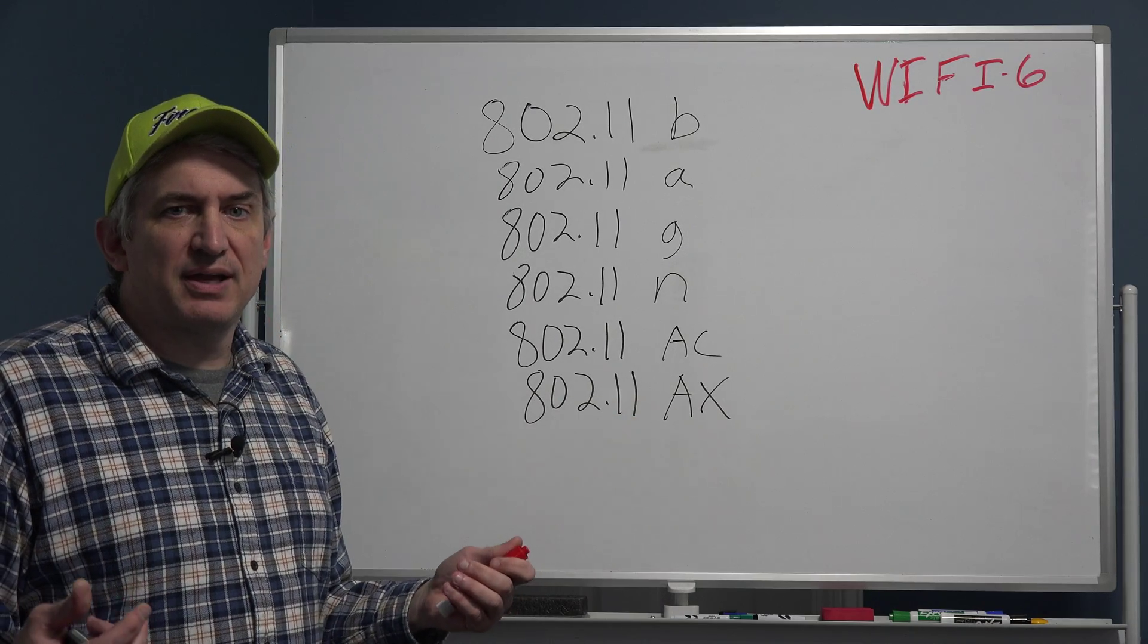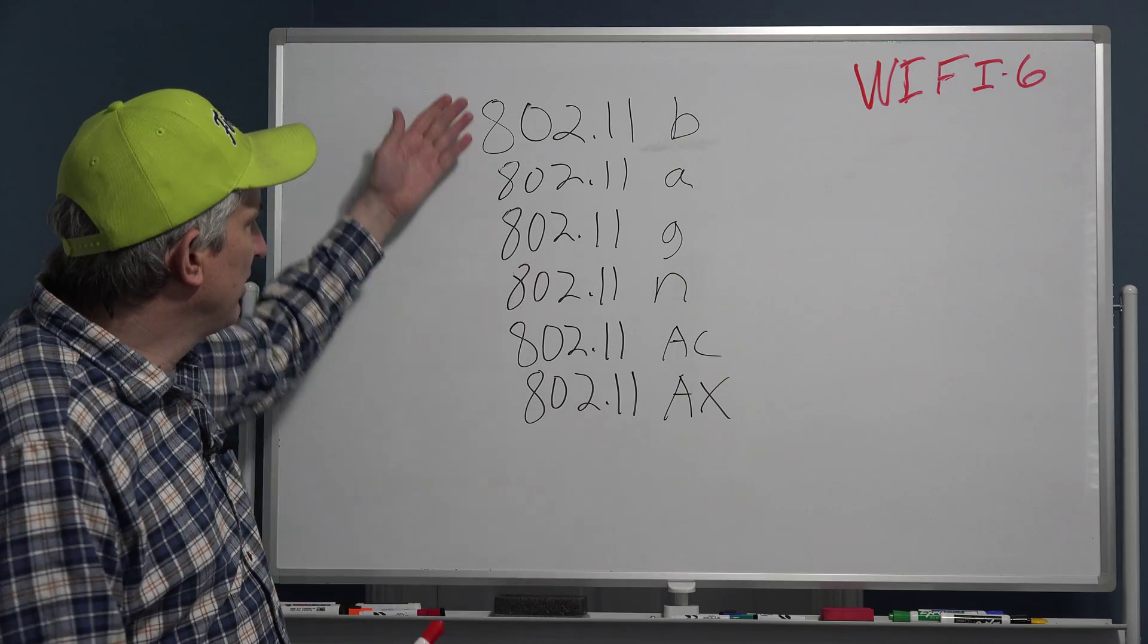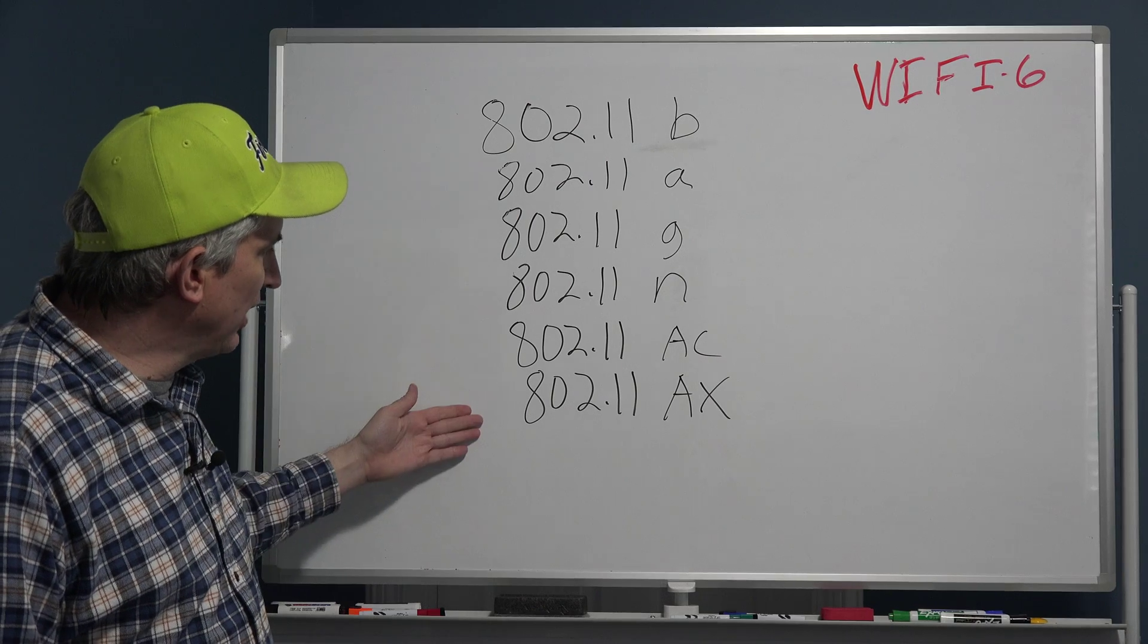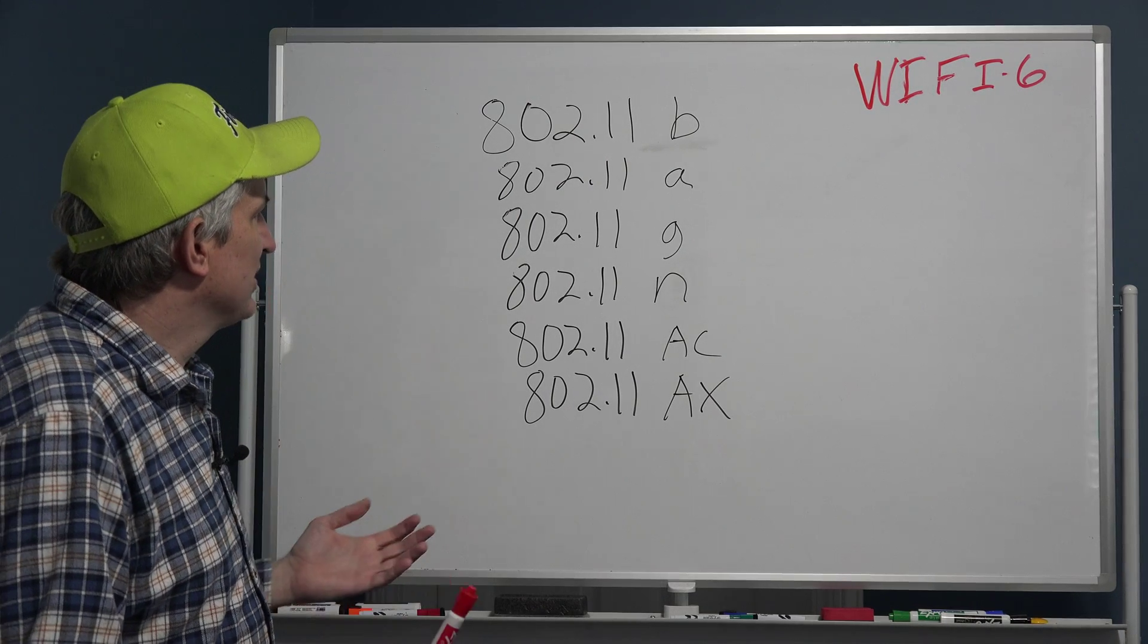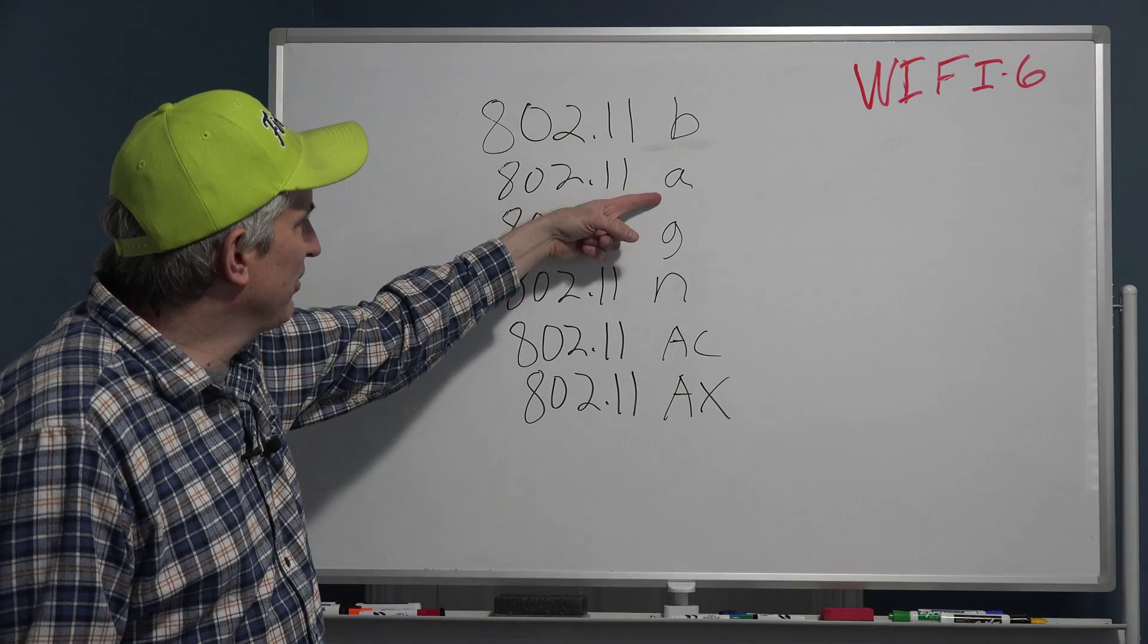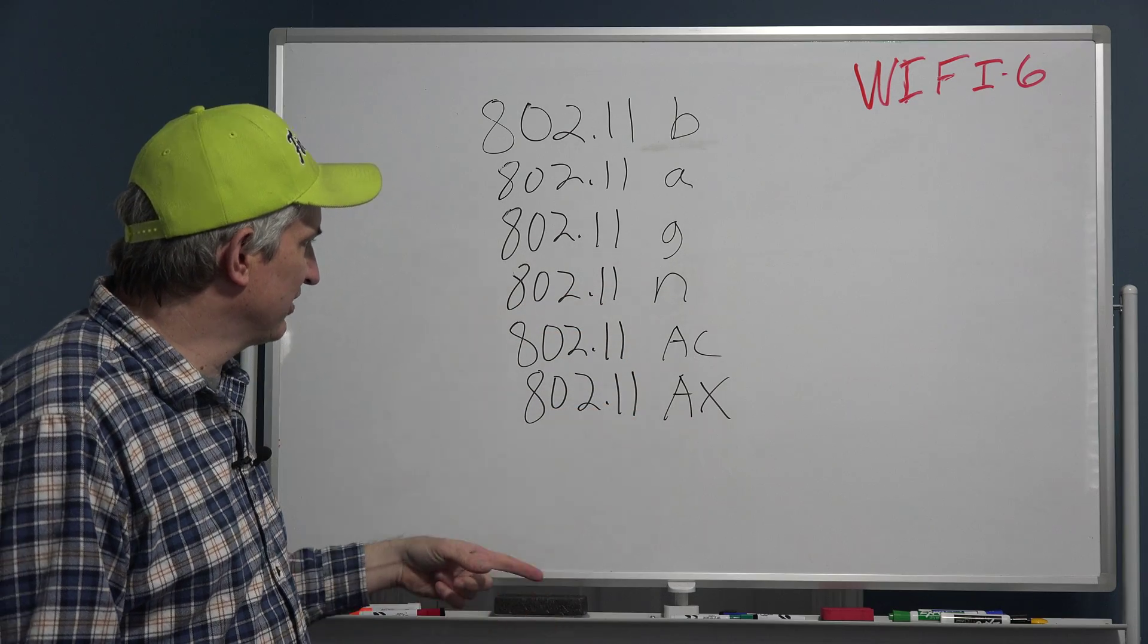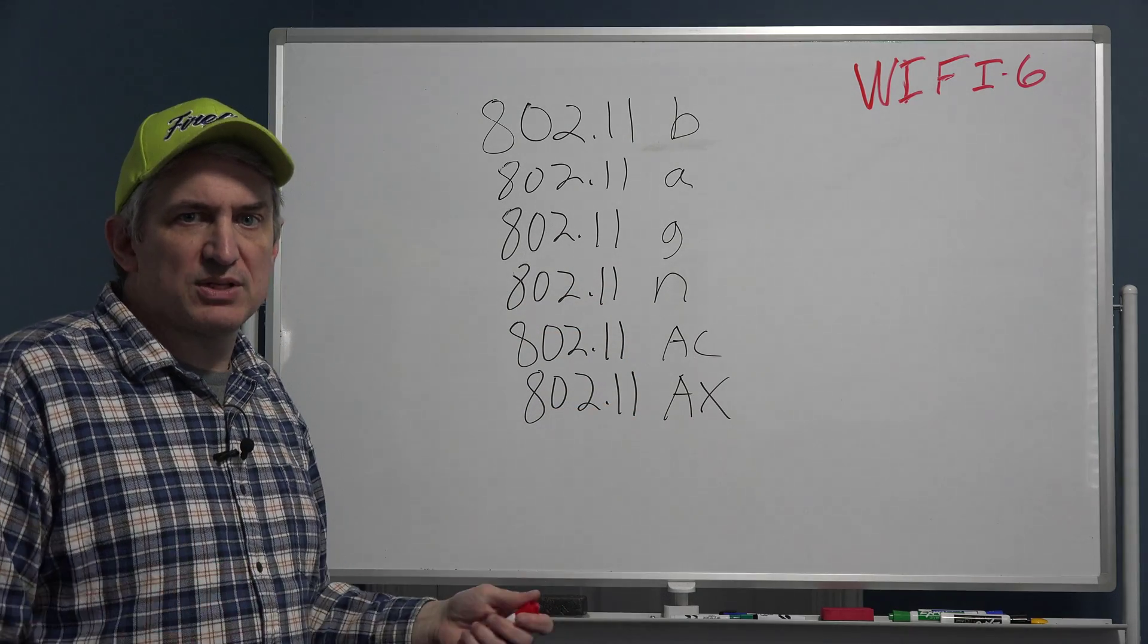See, the WiFi certification board, or whatever you want to call the people that come up with the rules that are in these documents, they decided it's really hard to tell what's better than what. I mean, is B better than A? Is n better than G? Is AC better than AX? Nobody really knows which one is better, so why not do it this way?